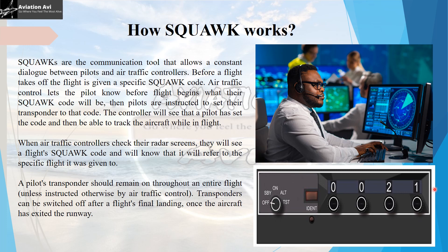A transponder looks like the device you can see in the image here, and these are the buttons that are used to set the squawk code. The controller will see that the pilot has set the squawk code and will then be able to track the aircraft when in flight. When an air traffic controller checks their radar screen, they will see a flight's squawk code and will know that it is referring to a specific flight. A pilot's transponder should always remain on for the entire duration of the flight, and it can only be switched off after landing once the aircraft has exited the runway.